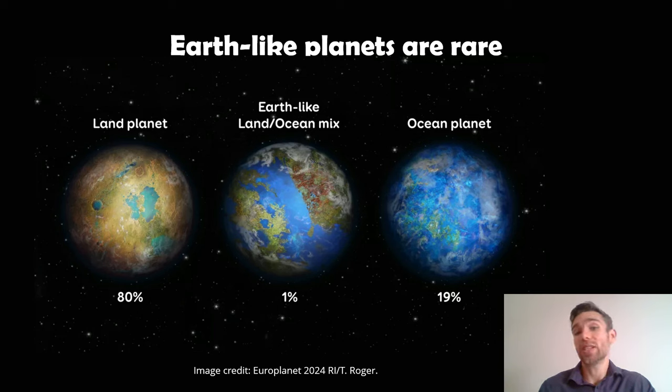And if you then split that out into different sorts of Earth-like planets, then ones with land-ocean mixes like Earth are even rarer. They make up like 1% of those. The vast majority are land planets that don't have those big oceans. They could be like lava worlds or dry planets. Maybe they're too hot, they just don't have the liquid water on. But there's actually more ocean planets than there are ones like Earth as well. So Earth-like planets, exactly like ours, extremely rare.